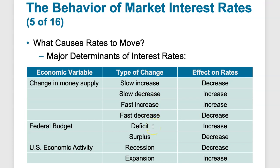Regarding the federal budget: a deficit can increase rates because it makes the federal government slightly riskier and puts pressure on inflation through higher spending. A surplus, which all governments should strive for, puts a decrease on rates — when there's a surplus, the government isn't trying to borrow heavily, so there's less demand on borrowing money, which depresses rates. In a deficit, greater demand for borrowing puts upward pressure on rates.